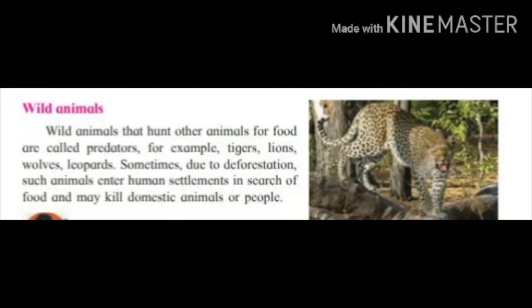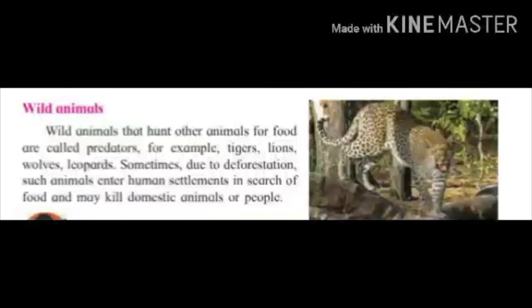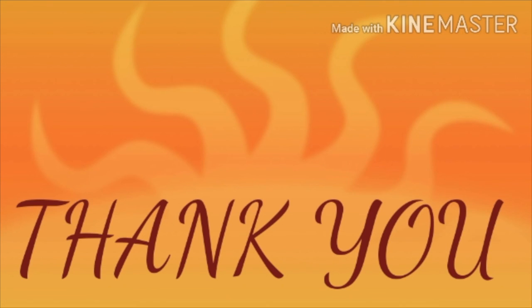Wild animals that hunt other animals for food are called predators — for example, tigers, lions, wolves, and leopards. Sometimes, due to deforestation, such animals enter human settlements in search of food and may kill domestic animals or people. With this, we finish the revision part of our lesson. We'll meet in the next session with our next lesson. Thank you.